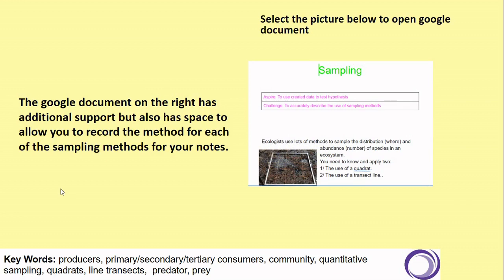The information from both links can now be used on the Google sampling document you have. Click on the picture to bring up the Google document, which can be typed into and printed at a future date. It is clear and straightforward with embedded links for added information. If you want to see how either method works, pause the video to do that at this point.